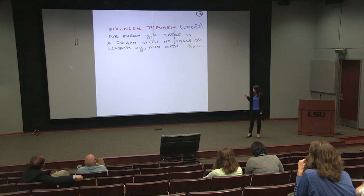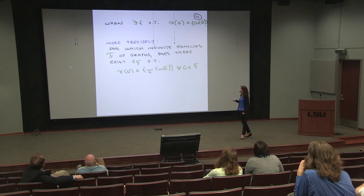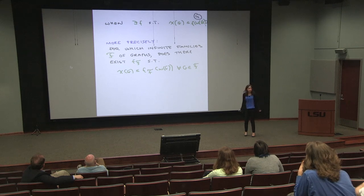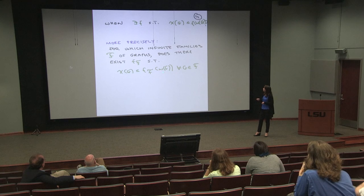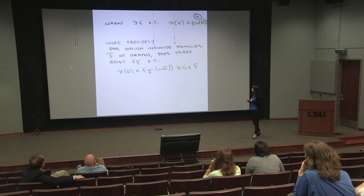If there's no f that always works, then you can ask: when is there an f? When is there a function f so that the chromatic number of G is at most f of omega of G? For this question to make sense, you need to think about it carefully. For one graph, you just have two numbers — omega and chi — so asking for a function to connect them isn't a question. What you want to ask is: for which infinite families of graphs is there a function so that for every graph in the family, the chromatic number is at most this function of the clique number? To make this easier to work with, let's close the family under taking induced subgraphs.